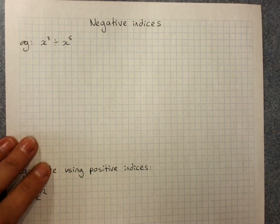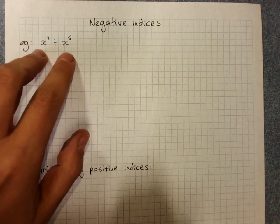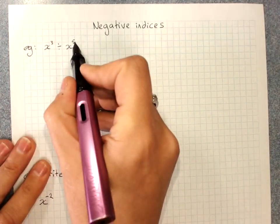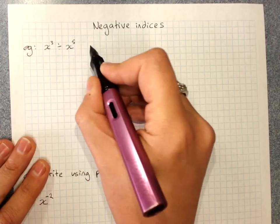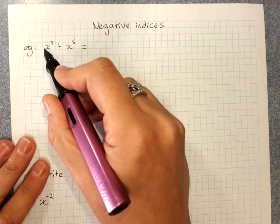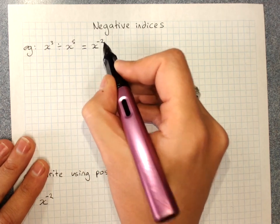If I use index law 2, the division of terms with the same base, then I know that we subtract the powers, the indices. And x to the 3 take away 5 is x to the power negative 2.